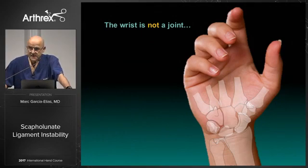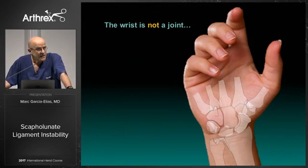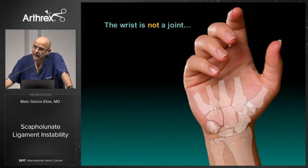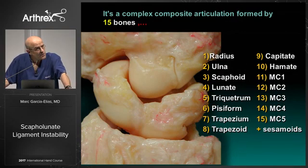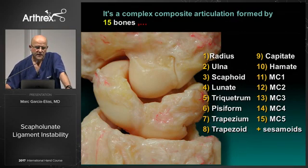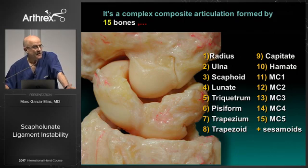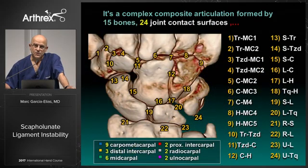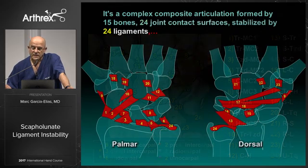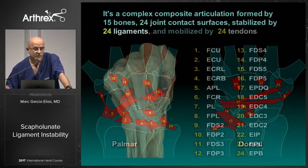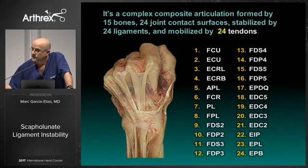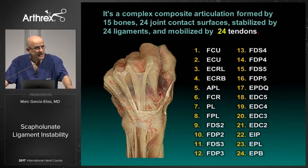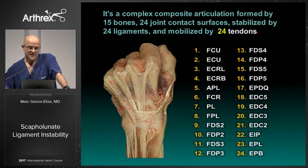The wrist is a potential destabilization articulation. We usually confound the wrist as if it was one articulation, but actually it's not a single joint. The wrist is a combined complex composite articulation formed by 15 bones. And the mystery here is why it has 24 joint contacts, 24 ligaments, and 24 tendons. If you have an explanation for that, I don't. But that makes the subject a little bit tricky, a little bit mysterious — and I like that.